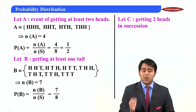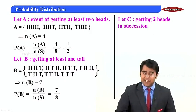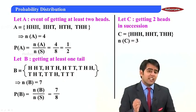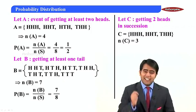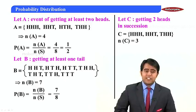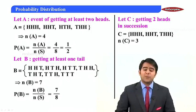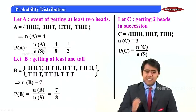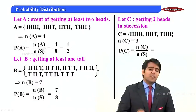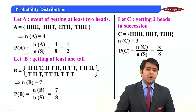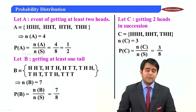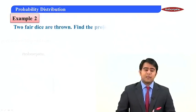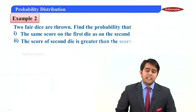For the third part, let C be the event of getting two heads in succession. In succession means one after the other. So C = {HHH, HHT, THH}, and n(C) = 3. Therefore, P(C) = n(C) / n(S) = 3/8. This is the required probability.